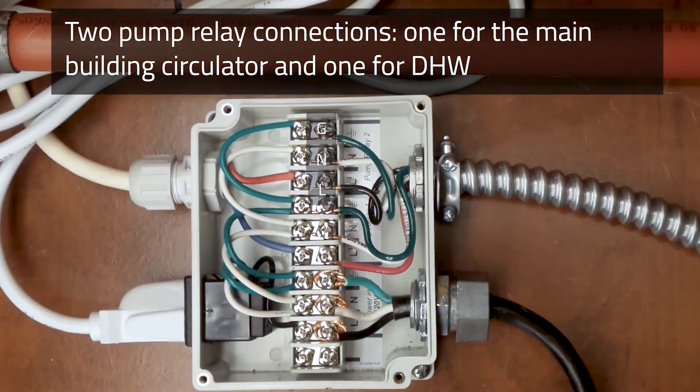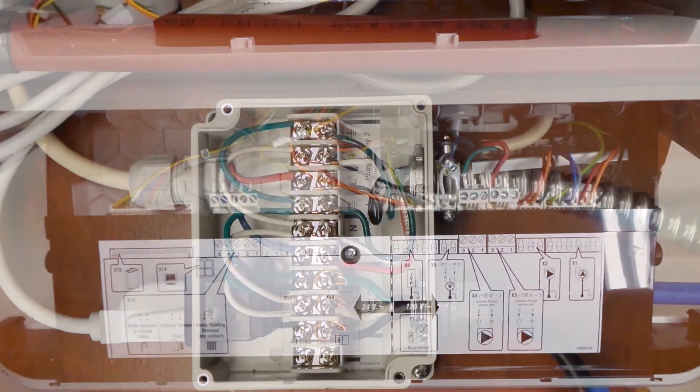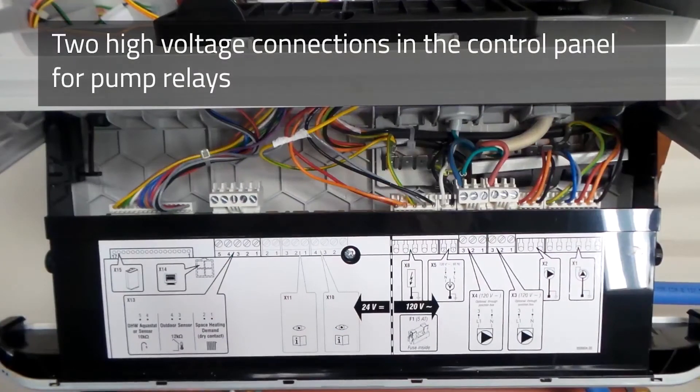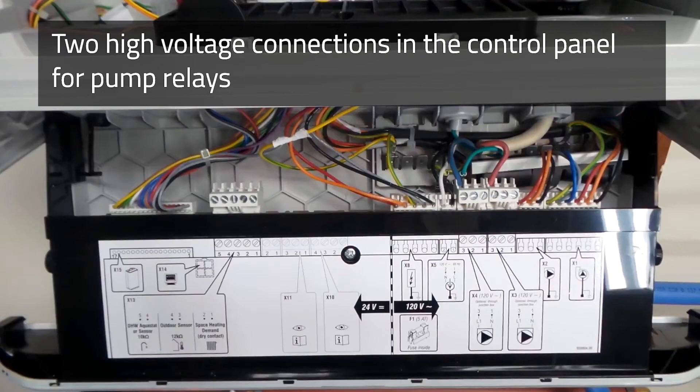As you can see, there are two pump relay connections here, allowing us one for the main circulator for the building, and the other for the DHW. Beyond that, we have the two high voltage connections that go down to our control panel for the pump relays.